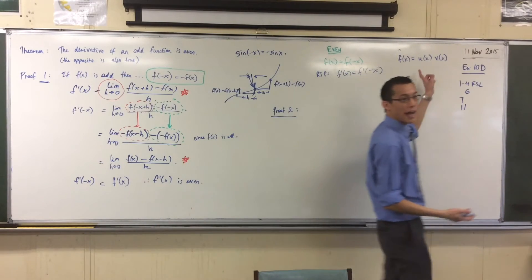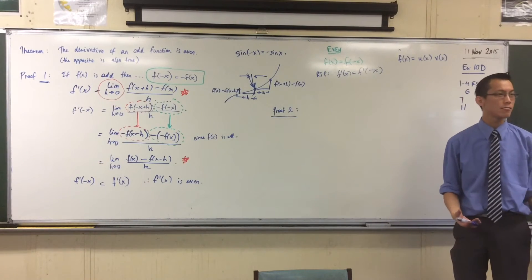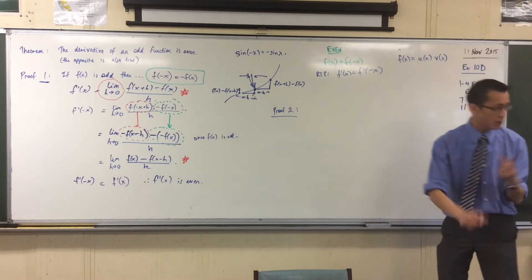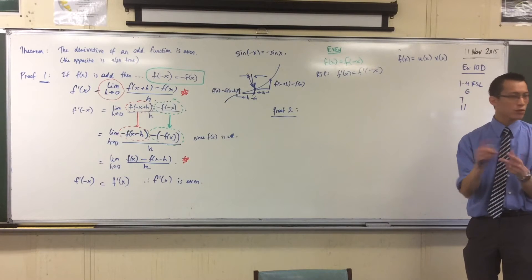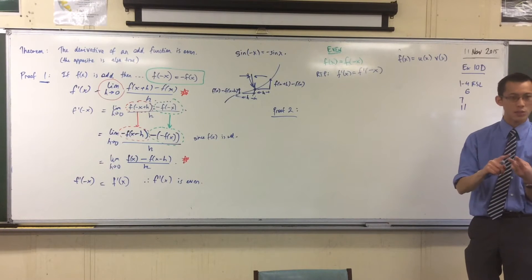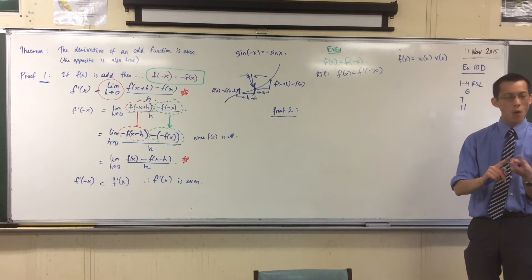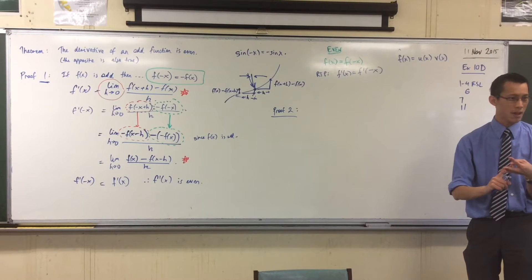In the same way if I had u divided by v, I could use the quotient rule no matter what u and v are. So product rule, quotient rule, these are all just rules that apply to anything. There's one more that you guys know about. You know about chain rule. Now why do I go to chain rule and think about that?